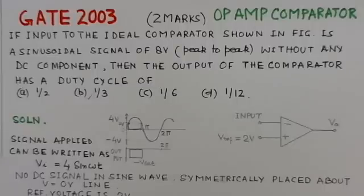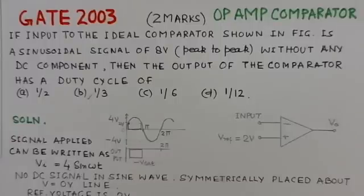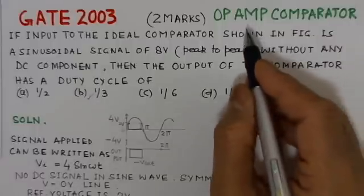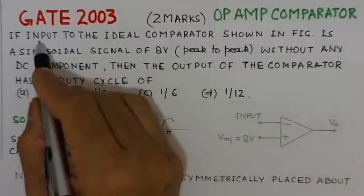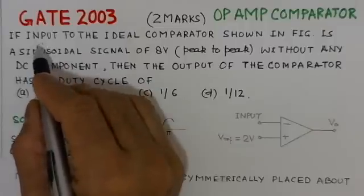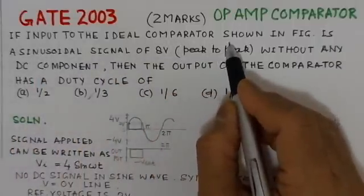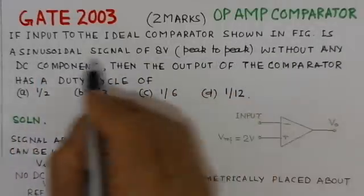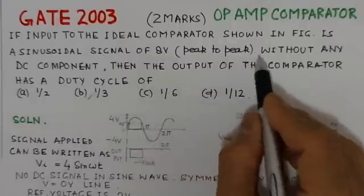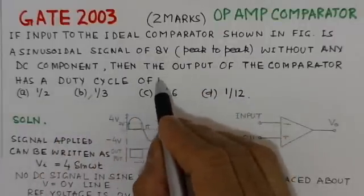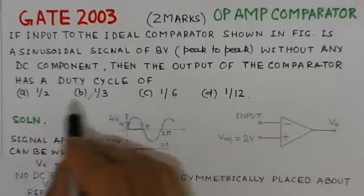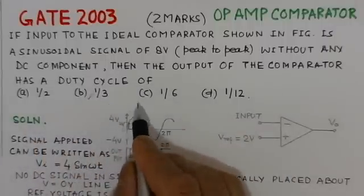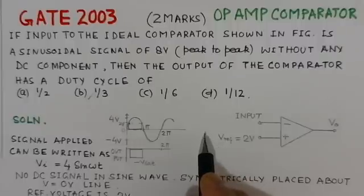The present problem is from GATE 2003 and is based on operational amplifier comparators. The problem states: if the input to the ideal comparator shown in figure is a sinusoidal signal of 8 volts peak to peak without any DC component, then the output of the comparator has a duty cycle of 1/2, 1/3, 1/6, or 1/12.